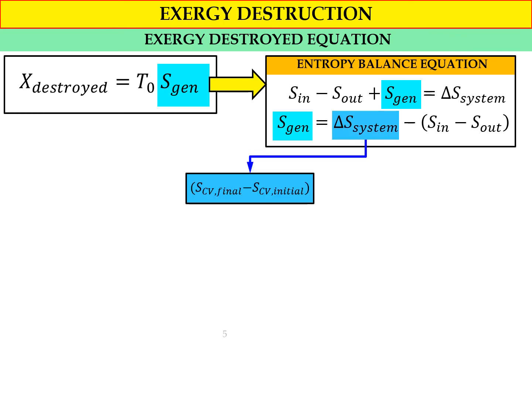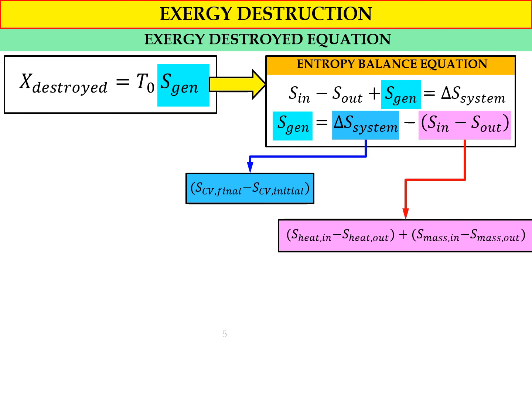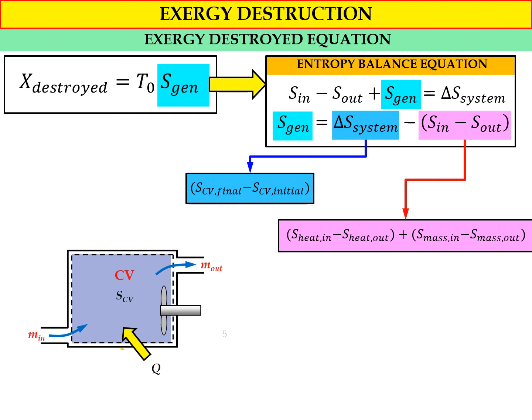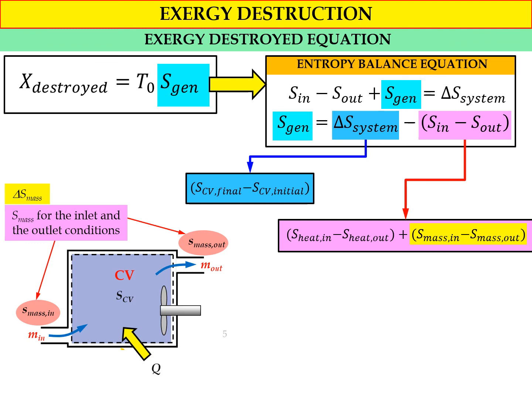Expanding this, the change in entropy of the system equals the entropy of the control volume at the final state minus that at the initial state. The term S_in minus S_out comes from both heat and mass flows. For a control volume with heat Q and mass flow rates in and out, delta S_mass is the contribution from mass — specifically S_mass_in minus S_mass_out from the inlet and outlet mass flow rates.